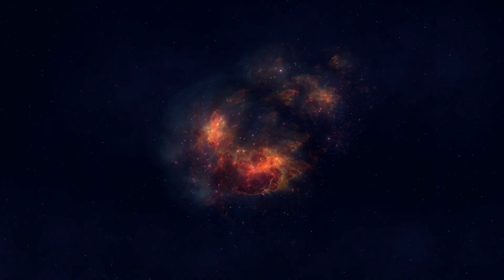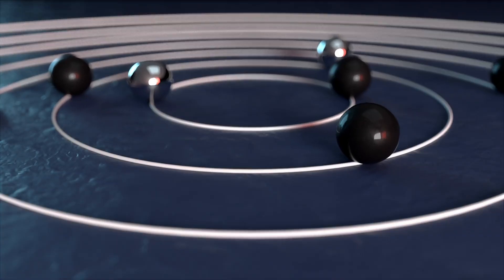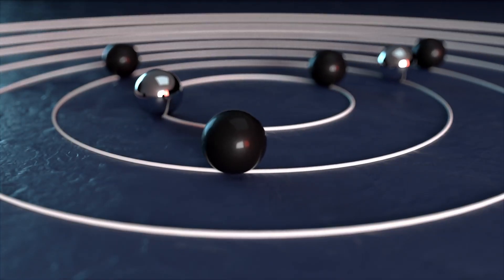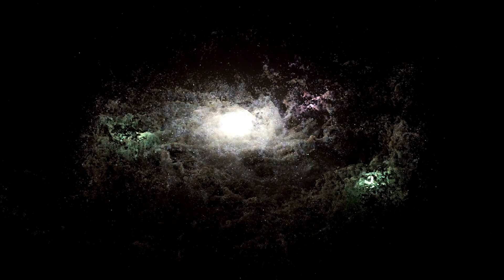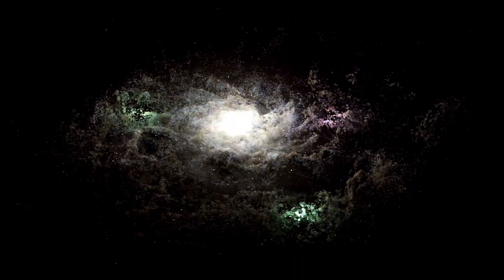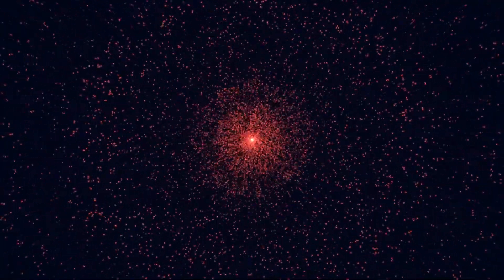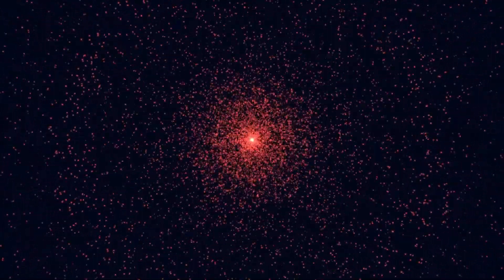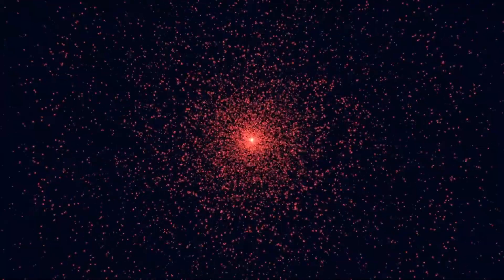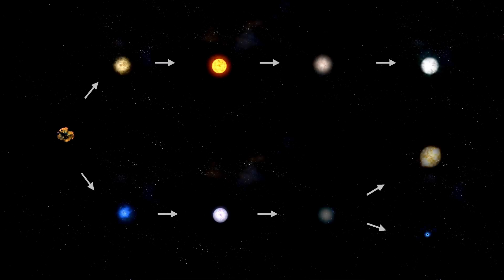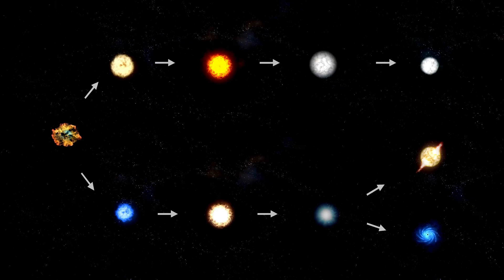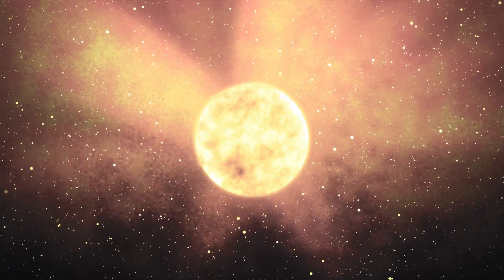This wasn't a one-off. Betelgeuse is a pulsating variable star, its brightness ebbing and flowing like a cosmic heartbeat. Its outer layers expand and contract in cycles, some short, around 185 days, others stretching over 2,300 days. When it expands, its surface cools and dims. When it contracts, it heats up and blazes brighter. These pulsations aren't just quirks, they're driven by the star's internal chaos.